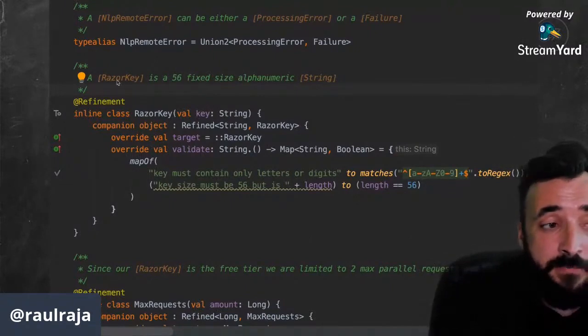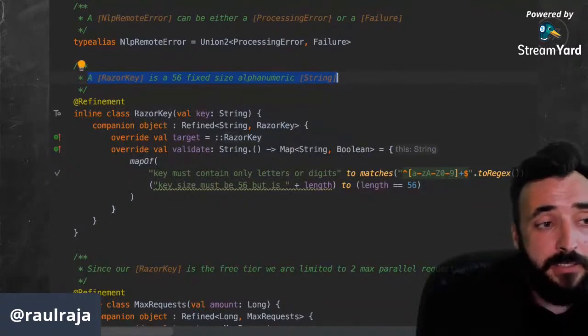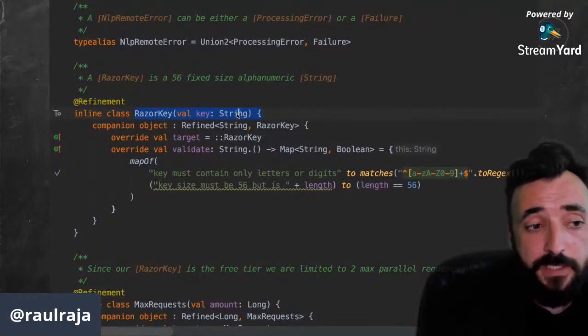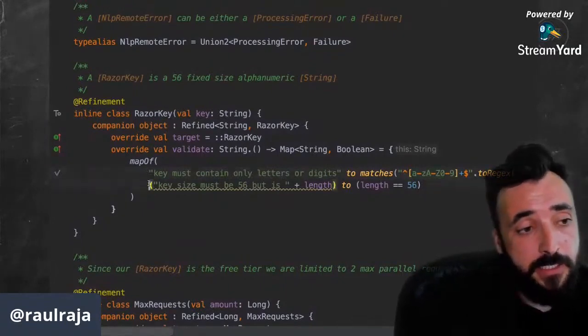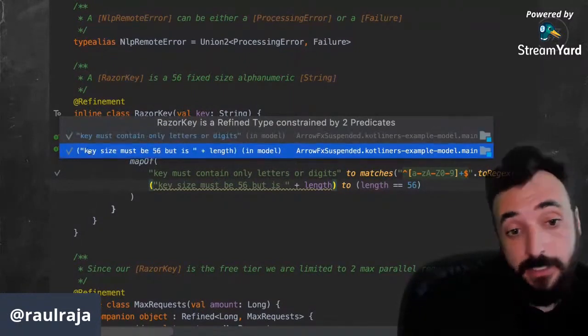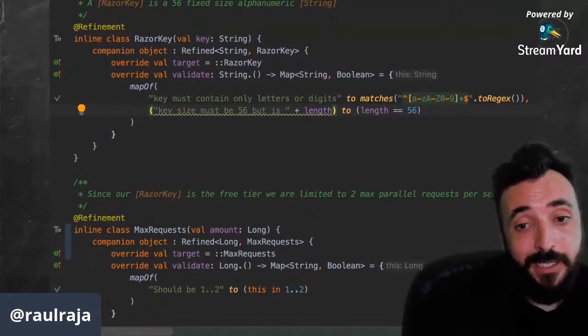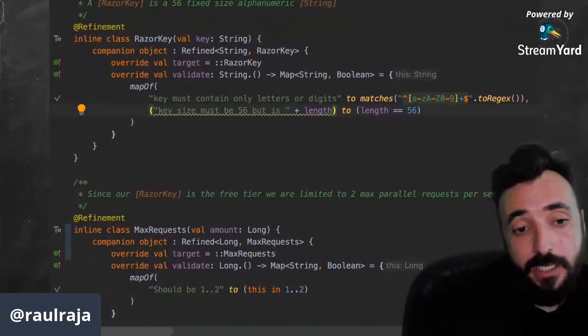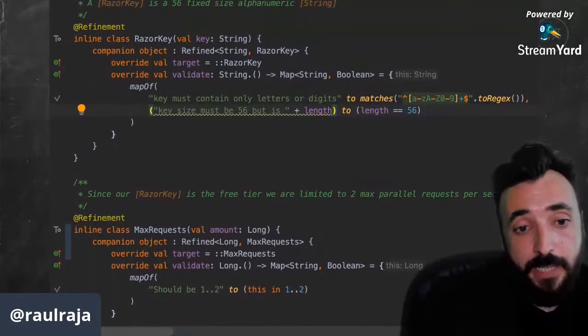In this example, this is a different domain model. We are modeling calls to our remote API where we have some things. We have a key and the key has some constraints, has to be of size 56 and it has to be alphanumeric. So we can see here that we can use the refinement annotation over an inline class and then we can specify each one of the predicates using the standard library. And that's the biggest difference with the type level approach that was asked before. Here we're using the standard library APIs to actually refine our types and we are able to evaluate these expressions as long as they appear within the compiler context in the compiler cycle. So we can capture whenever you're calling a constructor or something that is unsafe, as we will see in a little bit.